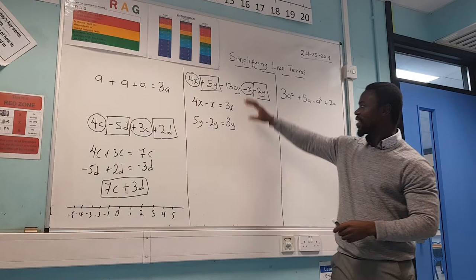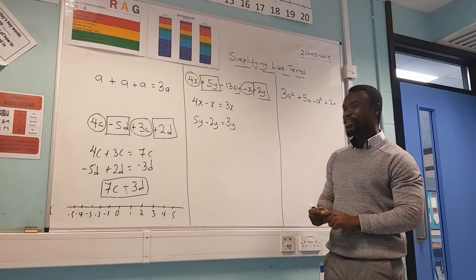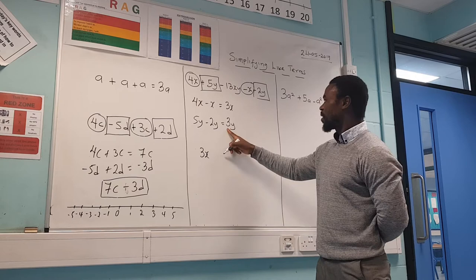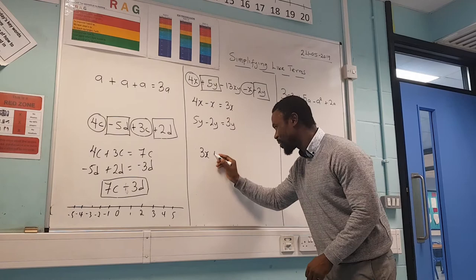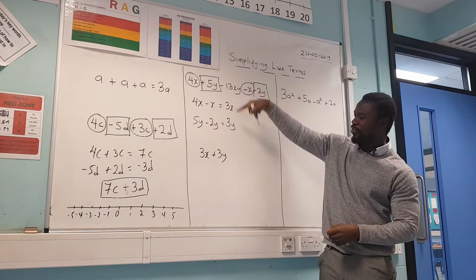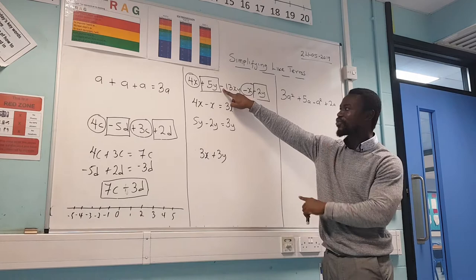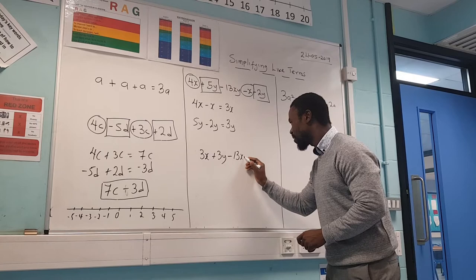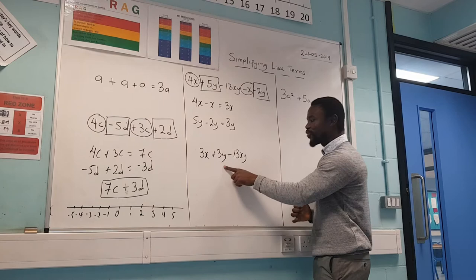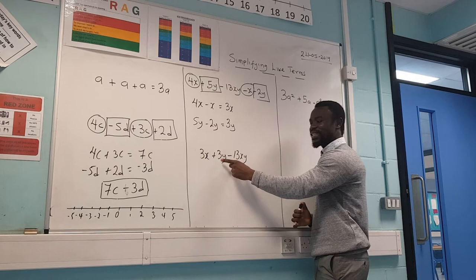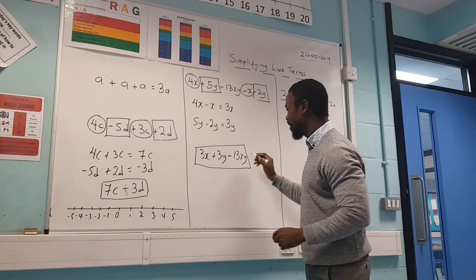I keep minus thirteen XY as part of my final answer. Writing the final answer: we have three X — there's no sign in front so it's positive — plus three Y. Don't forget the term we didn't combine; it has a minus sign in front, so we write minus thirteen XY. X and Y are different from when they are written together, so I cannot add or subtract them from the individual X or Y terms.